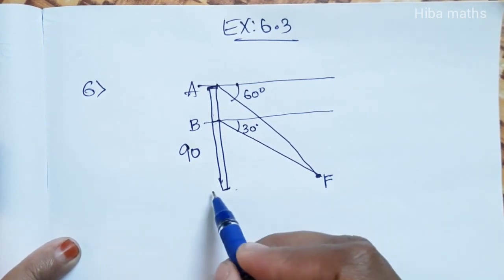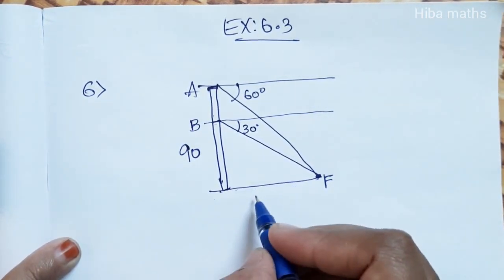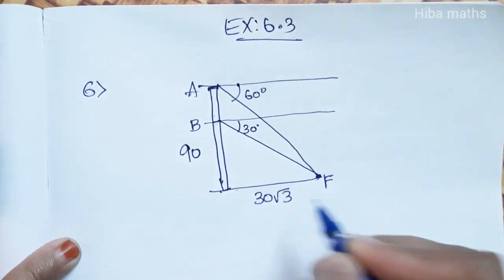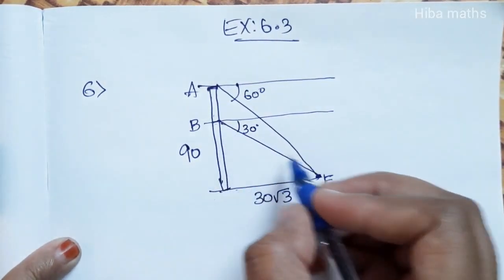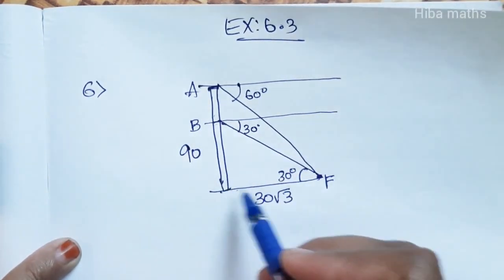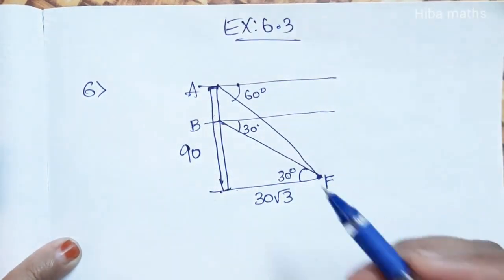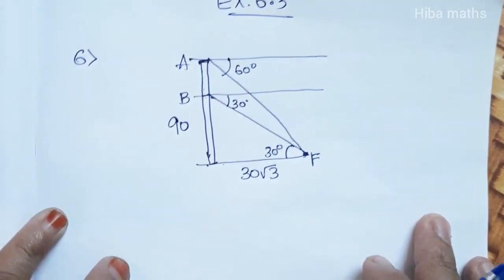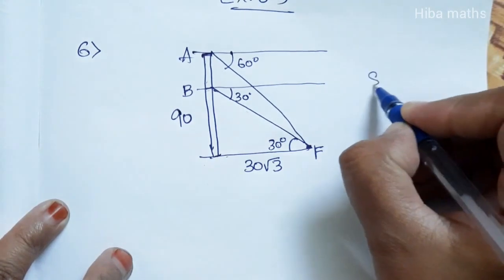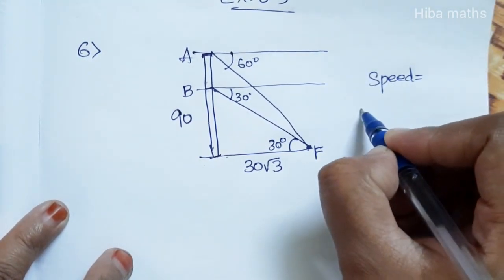The angle reduces to 30 degrees after 2 minutes. Now let's work out the speed. We use the angle of 30 degrees in our triangle calculation. The full height is 90 feet.